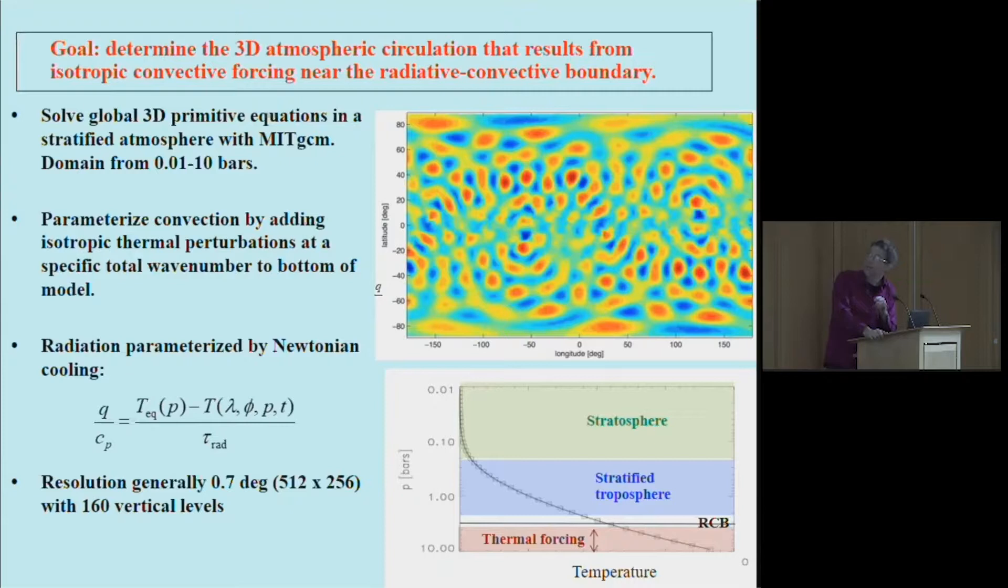The intention is just to push the material surfaces at the bottom of the model up and down in a random way that would represent what convection might do. The characteristic wave number or wavelength of these is a free parameter that we vary, characteristic time scale likewise, although these can be constrained by what you would expect the convection to do in the interior, so we have bounds on what we would expect.